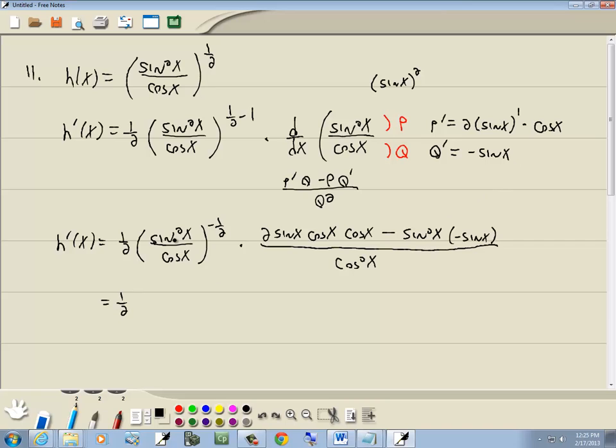Now back to this first fraction here. Whenever you have a fraction to a negative power, if you remember from intermediate algebra, you flip the fraction. Take the reciprocal of it. So we have cosine over sine squared. And then the sign of the exponent becomes positive, so that becomes a positive one half.